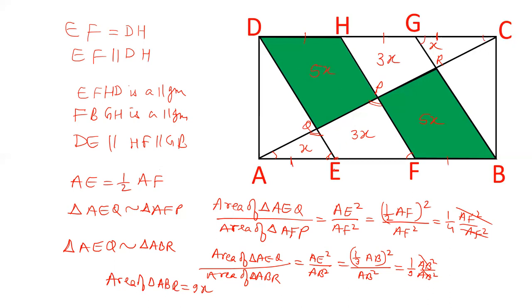Now area of EFHD. This is a parallelogram. This is x into y. And area of AED is half x into y. So this part is half of parallelogram. And similarly GCB. Now let's write down what I have explained.